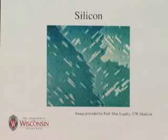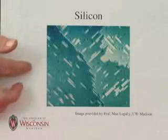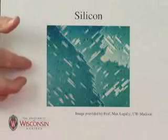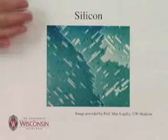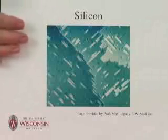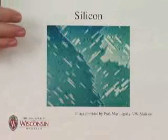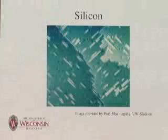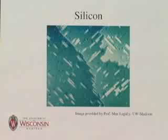Speaking of a silicon surface, here we see an image that was taken here at the University of Wisconsin by Mac Legale's group. It shows various different step layers of silicon atoms — they're not all on the same level. We have some that are a little higher than others. And if you look very closely, there are some dark spots that represent holes in the surface, depressions where an atom is not found.